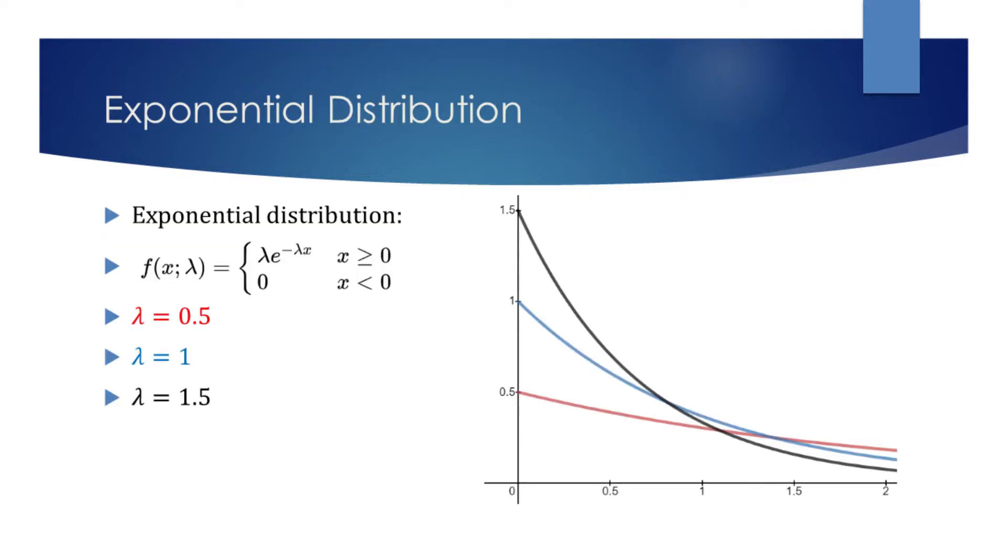We can now see the function and the plot for the exponential distribution. This distribution is mainly used to place a sharp peak at x equals 0.